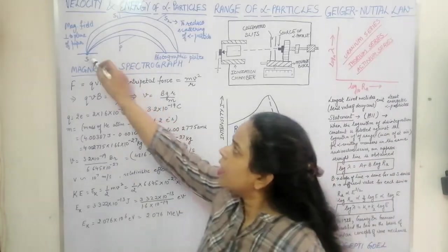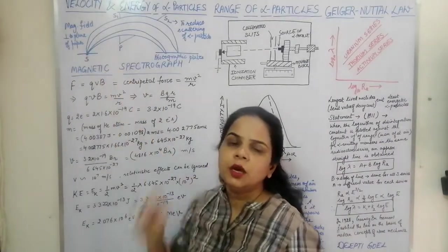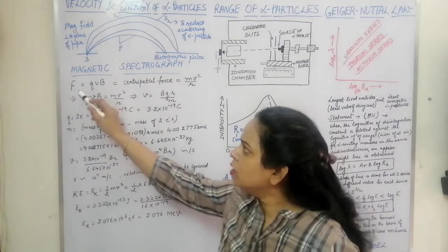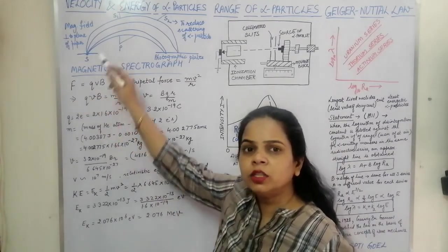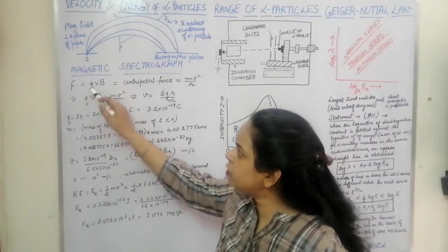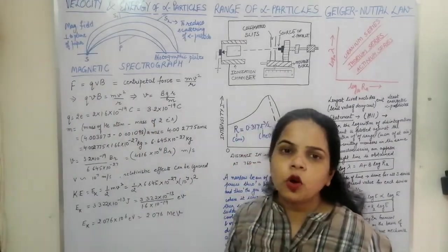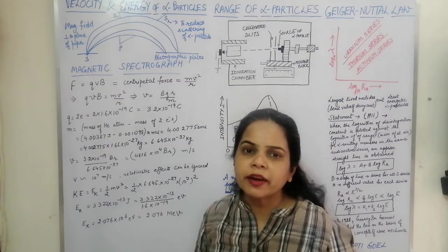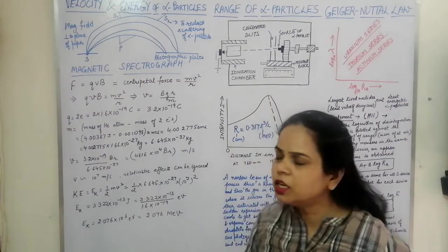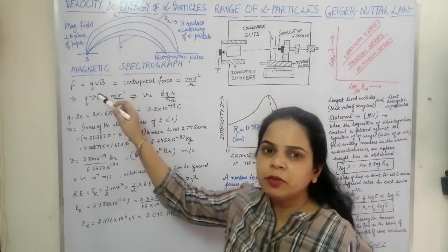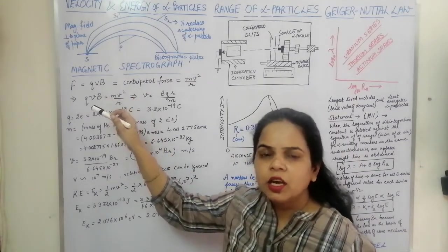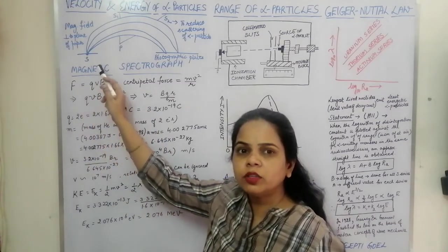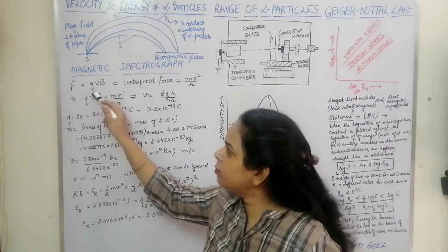Since the alpha particle moves in a magnetic field applied perpendicular to the plane, the magnetic force is given by F = QVB. Because the velocity and magnetic field are perpendicular to each other, sin θ = sin 90° = 1, so the magnetic force acting on the alpha particle is simply QVB.